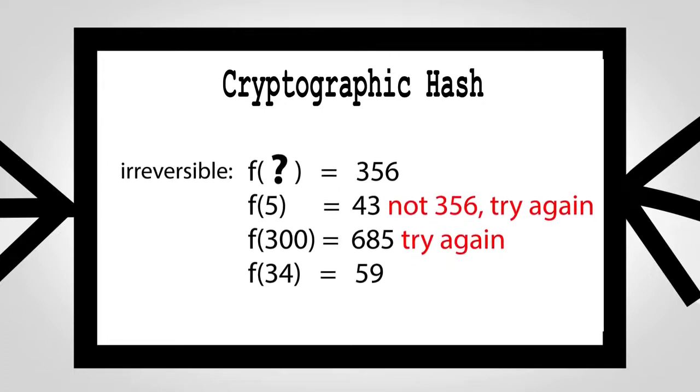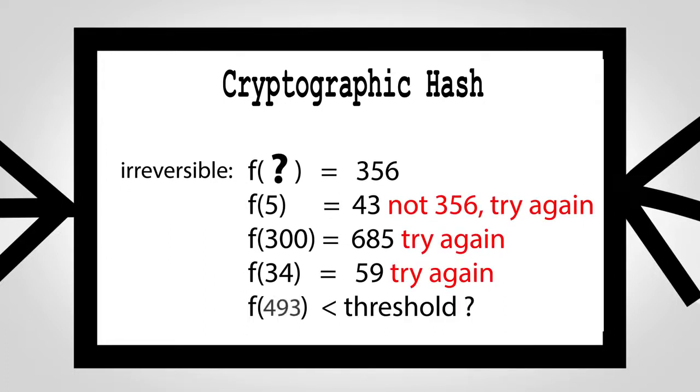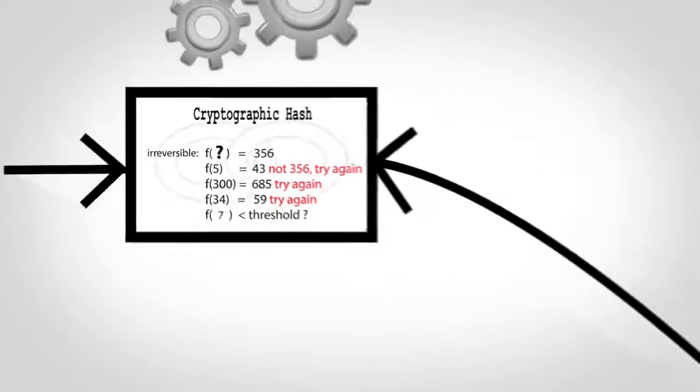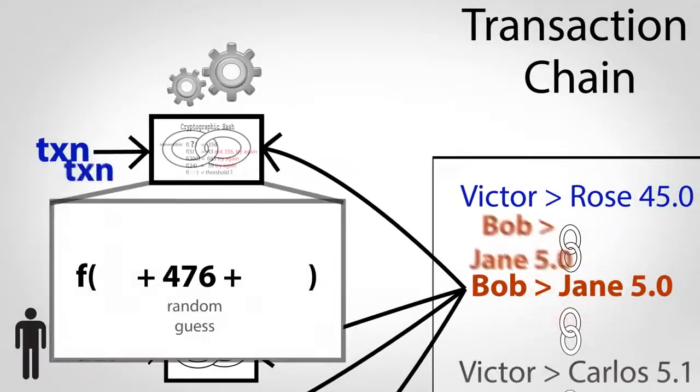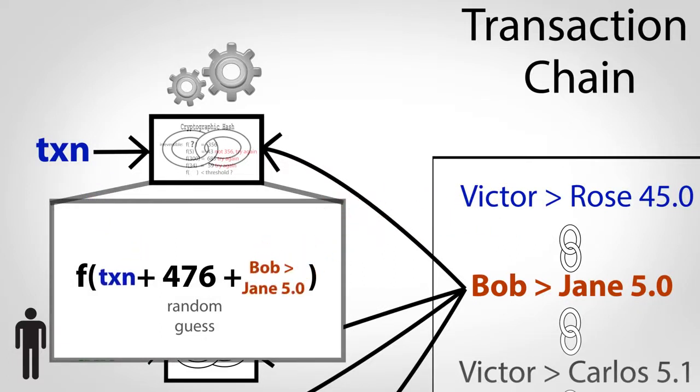And this is literally what people are doing in Bitcoin, feeding this function random numbers until the output meets certain criteria. Besides a random guess, you also input a transaction from the pending pool and chain, which is where the linking part comes in.